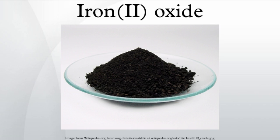Iron(II) oxide adopts the cubic rock salt structure, where iron atoms are octahedrally coordinated by oxygen atoms and the oxygen atoms are octahedrally coordinated by iron atoms. The non-stoichiometry occurs because of the ease of oxidation of Fe²⁺ to Fe³⁺, effectively replacing a small portion of Fe²⁺ with two-thirds their number of Fe³⁺, which take up tetrahedral positions in the close-packed oxide lattice. Below 200 K there is a minor change to the structure which changes the symmetry to rhombohedral, and samples become antiferromagnetic.